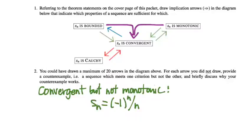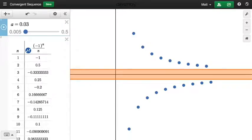Here's an example of a sequence which is convergent but not monotonic. So that means we have to justify why each of those claims is true — how do we know it's convergent, and how do we know it's not monotonic? Let me pull up a visualization of that sequence. Here's that sequence: minus 1 to the n over n, at least the first 20-some terms of it.